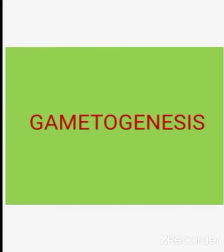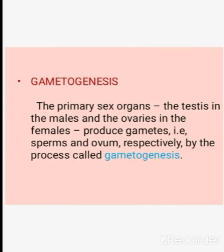Our next topic is gametogenesis, which comes after the female reproductive system in chapter 3. First, what is gametogenesis? We know that in males, the primary sex organs are the testis, which produce male gametes, that is sperm. And in females, the ovaries produce female gametes, that is ovum. The formation of gametes is processed upon gametogenesis.